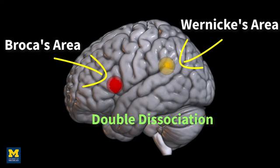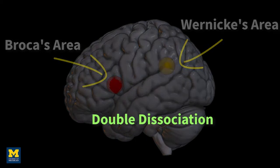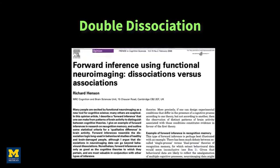This has led neuroscientists to conclude that these areas are responsible for distinct functions: generating versus comprehending language.